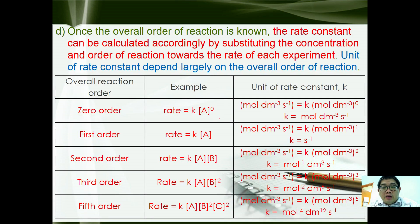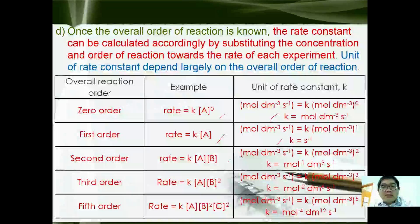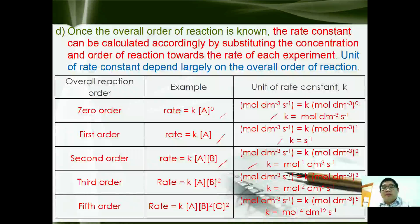The unit of the rate constant depends largely on the overall order of reaction. For zero order, the rate constant unit is mol dm⁻³ s⁻¹. For first order, rate constant is s⁻¹. For second order, rate constant is mol⁻¹ dm³ s⁻¹, and so on. In this section, we are going to study three orders of reaction: first order, second order, and zero order of reaction.